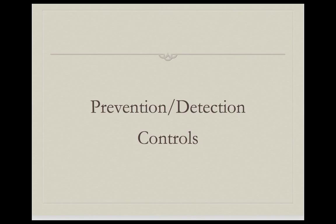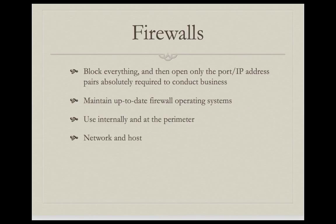Now we're going to look at prevention and detection controls. One of the most common controls is firewalls. With a firewall, best practice is to block everything and then open only the port and IP address pairs that are absolutely required to conduct business. So we close everything, and if something needs to get through to a specific server, we put in the server's IP address and the port used by the service or application, and we allow that. It's also important to maintain up-to-date firewall operating systems.